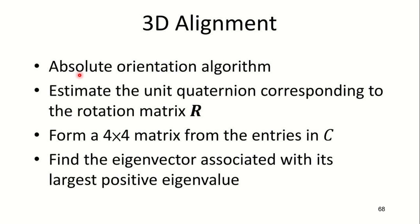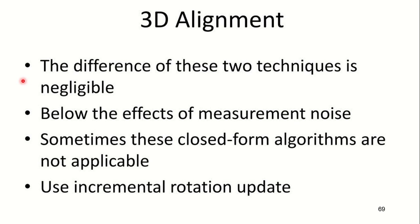In 3D alignment, in the Absolute Orientation algorithm, we estimate the unit quaternion corresponding to the rotation matrix R. Form a 4×4 matrix from the entries in C. Find the eigenvector associated with its largest positive eigenvalue. The difference of these two techniques is negligible below the effects of measurement noise. Sometimes these closed form algorithms are not applicable and it uses incremental rotation updates.